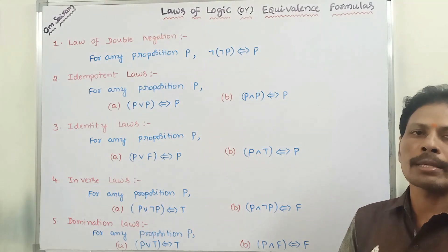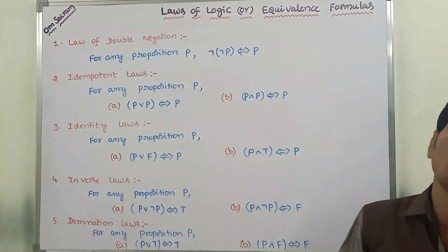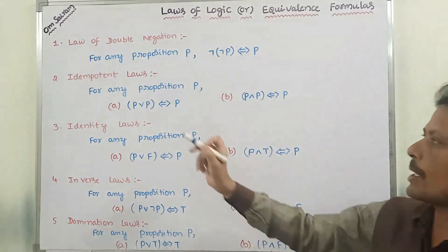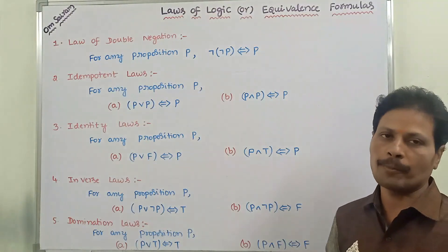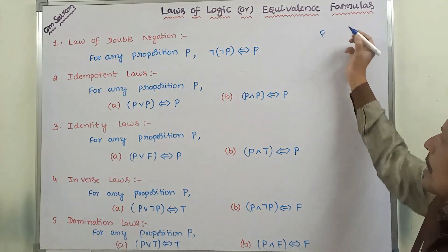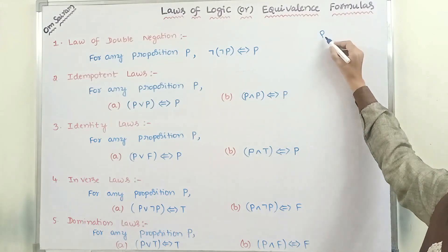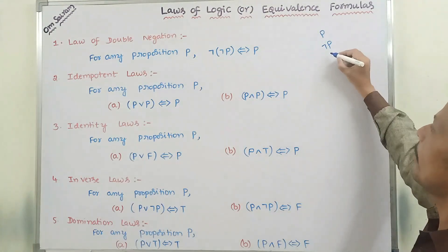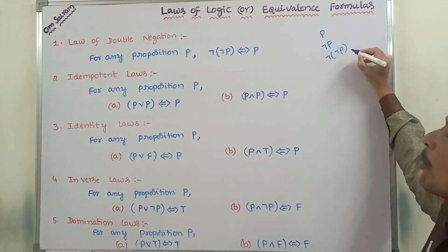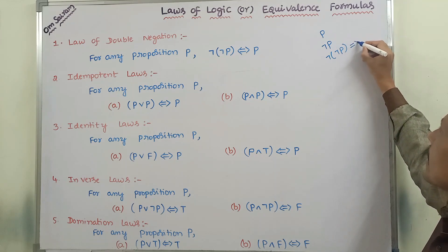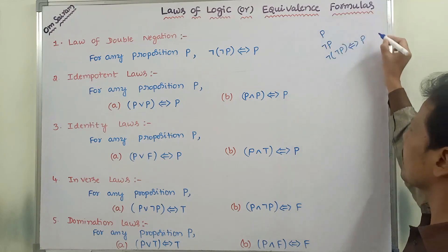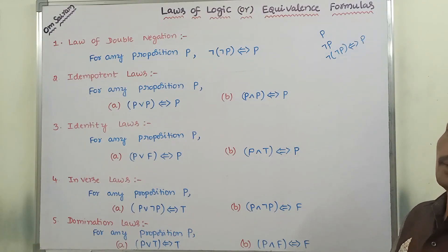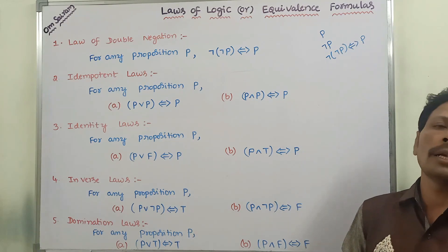Logical equivalence formulas can also be called as equivalence formulas for laws of logic. The first one is the law of double negation. Suppose we are taking proposition P and we apply negation to get negation P. Once again applying negation to negation P, it becomes negation of negation P, which is always logically equivalent to P. This is called the law of double negation — we are applying negation two times.